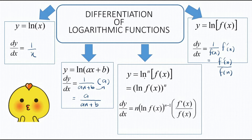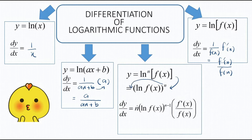The fourth rule: if we have y equal to ln^n(f(x)) — that is, ln(f(x)) raised to the power n — we must use the power rule. Bring the power to the front to get n, copy everything back inside the bracket as ln(f(x)), reduce the power to n minus 1, and only after that differentiate the ln(f(x)) part.